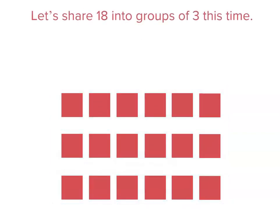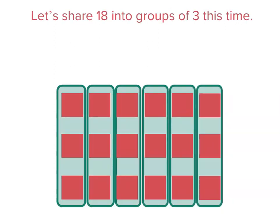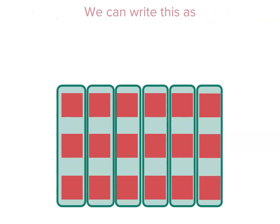Now we can share our 18 into groups of 3. And this time we've got columns of 3 pieces. But we can write that as a division as well. 18 divided by 3. 18 shared into groups of 3.